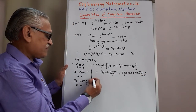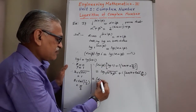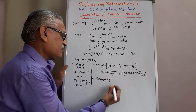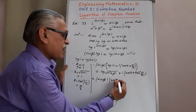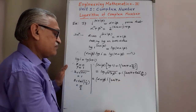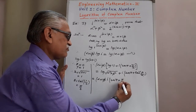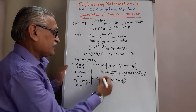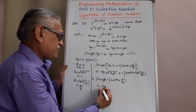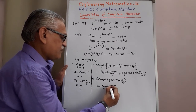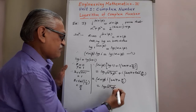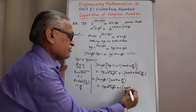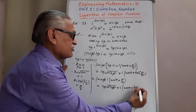Then, that is alpha plus i beta times, log 1 is 0, so we have i into 2m pi plus pi by 2, is equal to log of root of alpha square plus beta square, plus i times 2m pi plus tan inverse of beta by alpha.